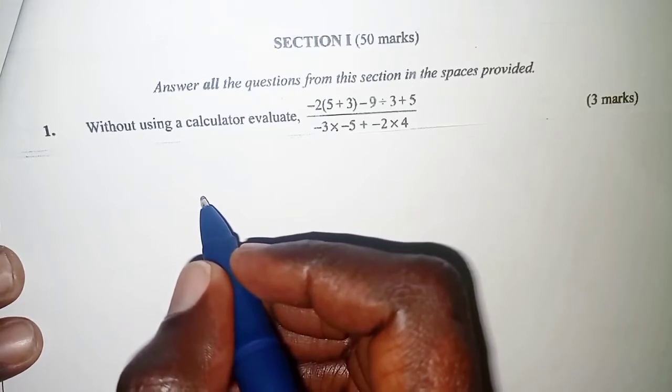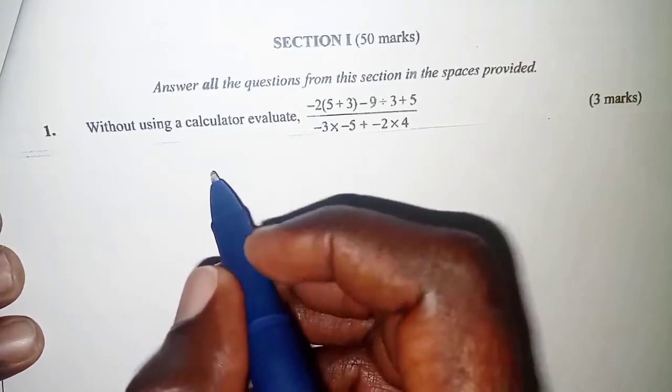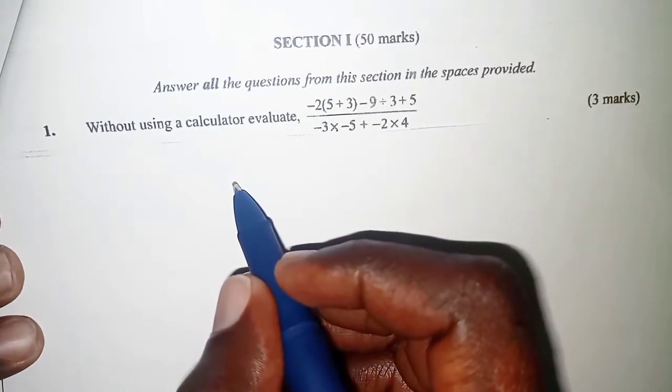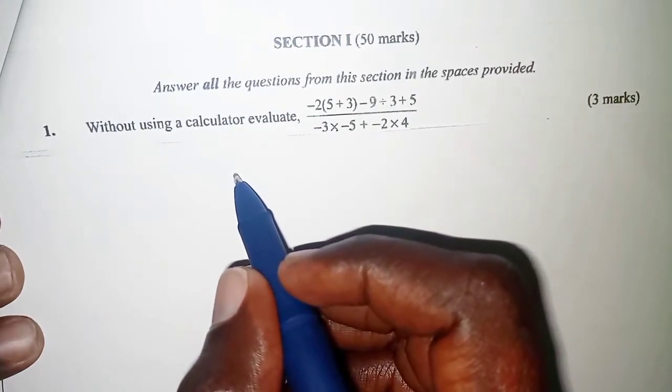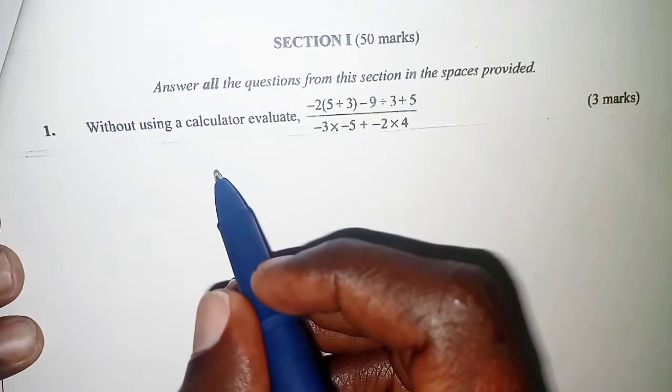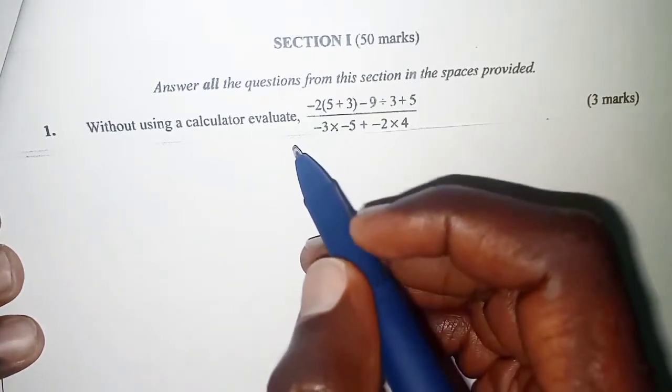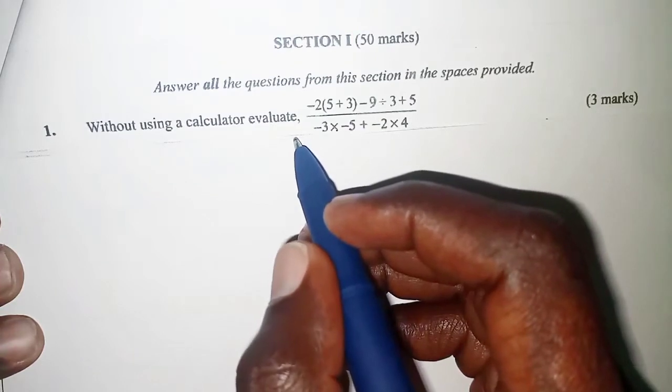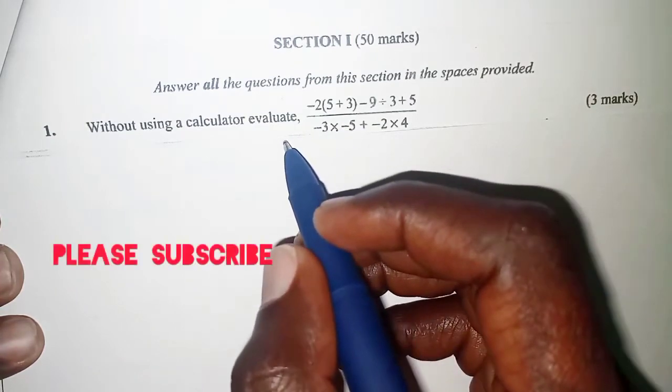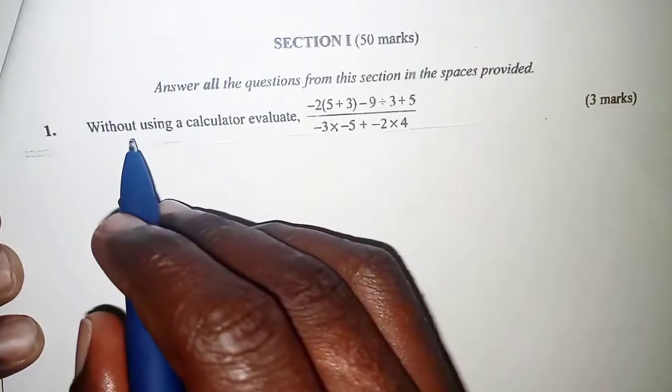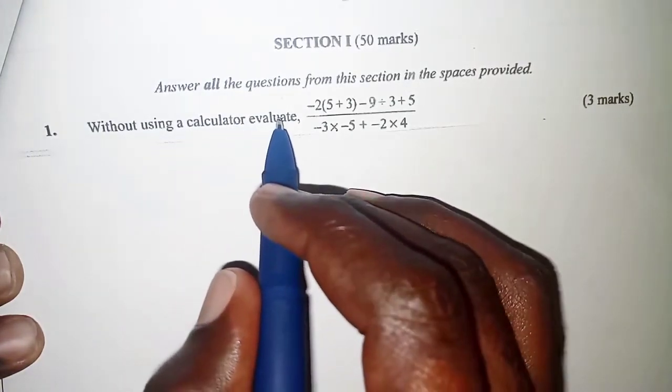Welcome to today's presentation. Now in today's presentation, we're going to look at KCSE mathematics paper 1, the year 2016, and we're going to look at question number 1. Question number 1 is about order of operations, that is BODMAS. The question reads, without using a calculator, evaluate,